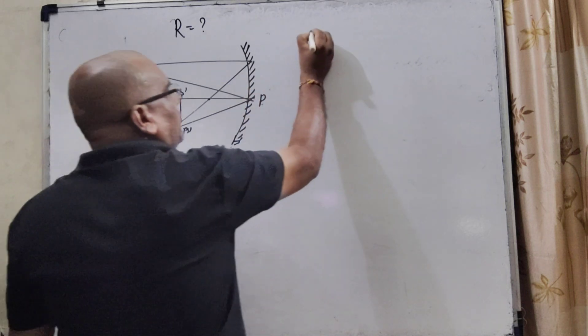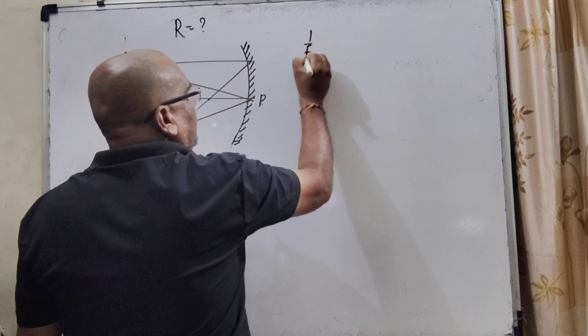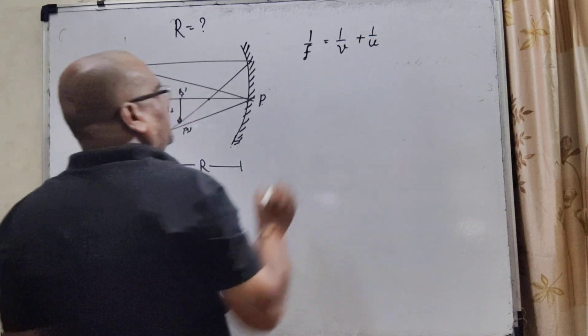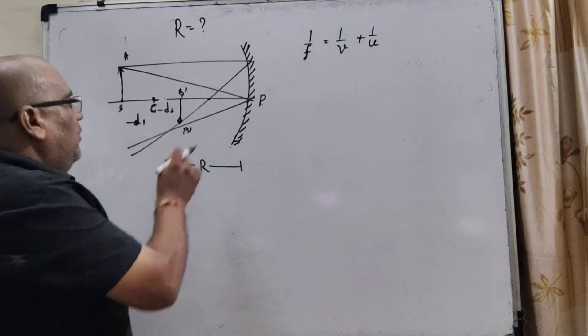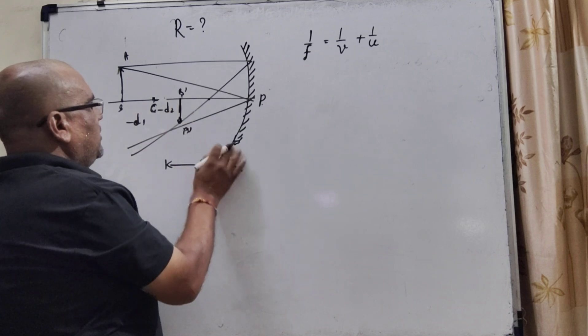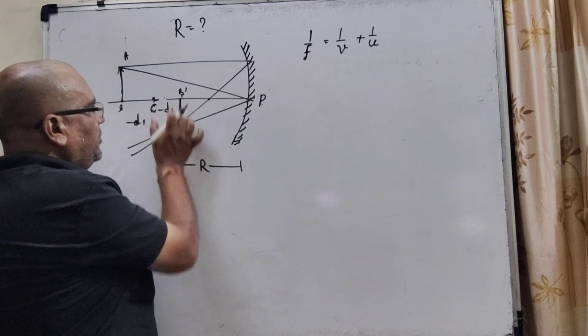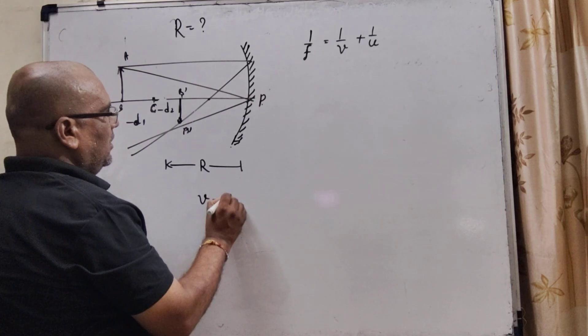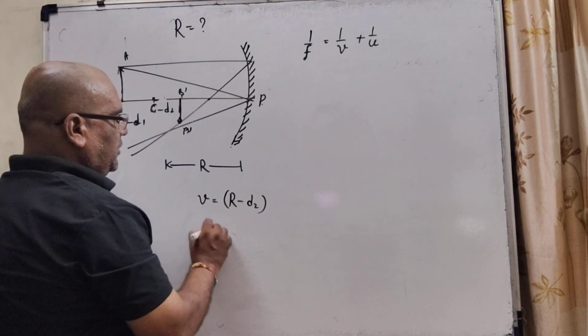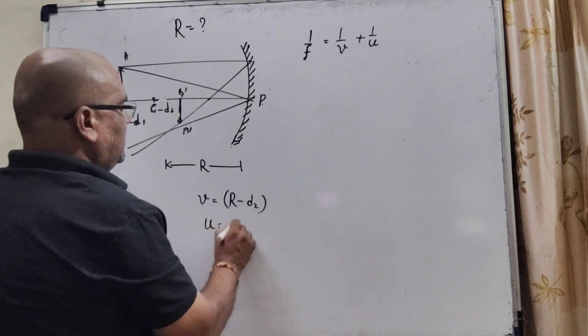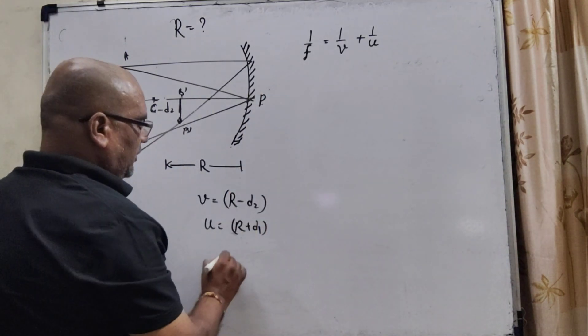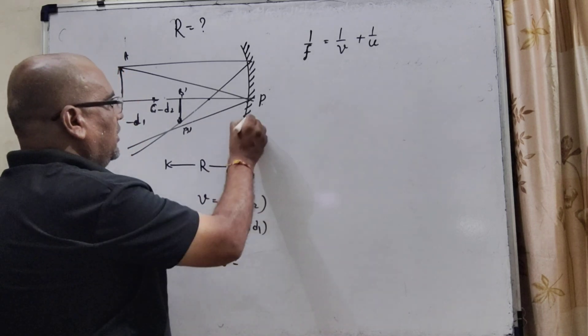As we know that, 1 upon f, the formula is equal to 1 upon v plus 1 upon u. Now, what is the distance from this image? That is, total distance is R and d2 is minus. So, v is equal to R minus d2. And what is u? That is R plus d1. And here, as we know that, f equals, for the concave, the focal length is negative.